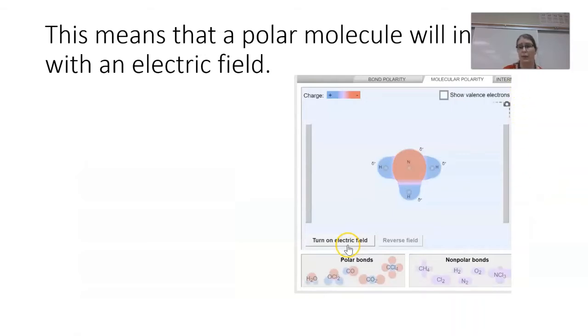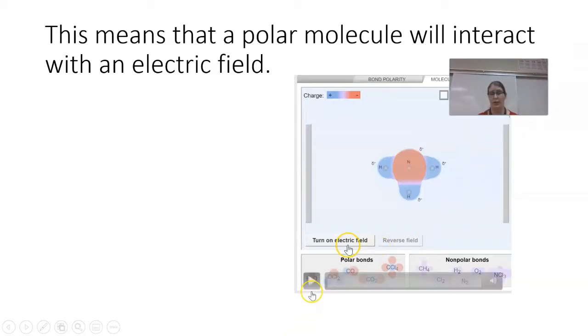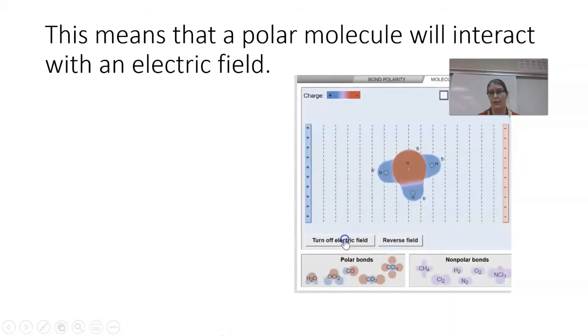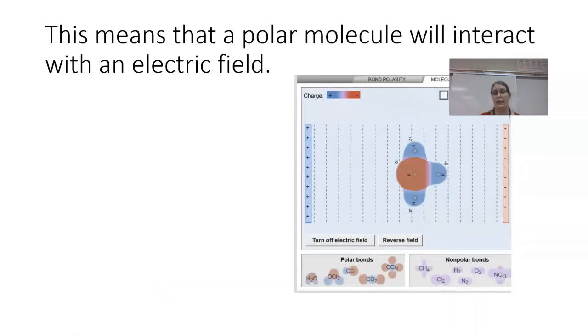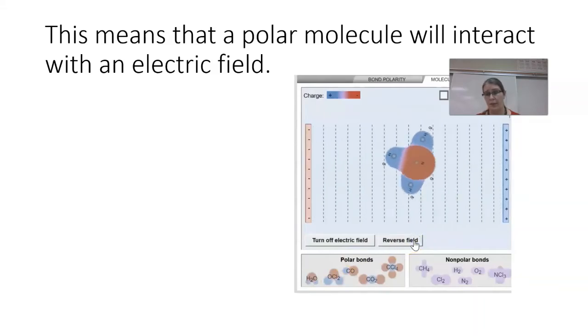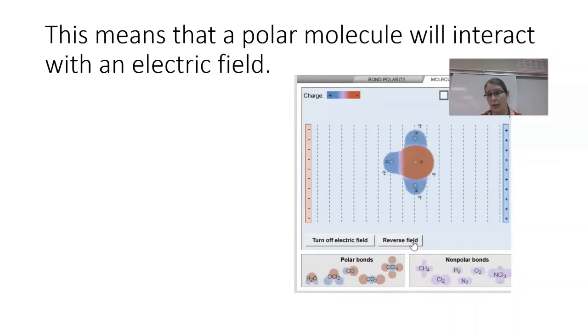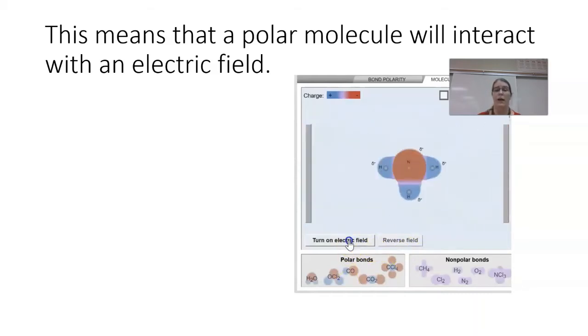This means that a polar molecule will then interact with an electric field. And I have a little demonstration here, a little video taking ammonia, which is a polar molecule, and seeing what happens if we interact that with an electric field. So if we turn on the electric field here, we can see we have a positive electrode and a negative electrode. And in this case, the molecule lines up so that the partial negative charge on the nitrogen is attracted to the positive electrode. And the partial positive side is oriented towards the negative electrode. And you can see I switched the field direction here, and the molecule rotated again so that it lines up that negative side always with the positive electrode.